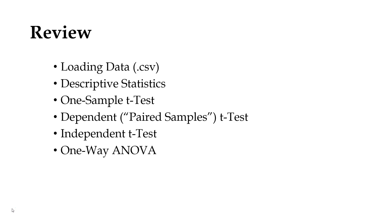When we load in those data, we can start already to pick apart what that study looked like by looking at the descriptive statistics. We can look at frequencies for categorical and nominal variables by making frequency tables, and we also looked at how to find the mean, the median, the mode, the standard deviation, and other statistics that may be useful for our continuous variables.